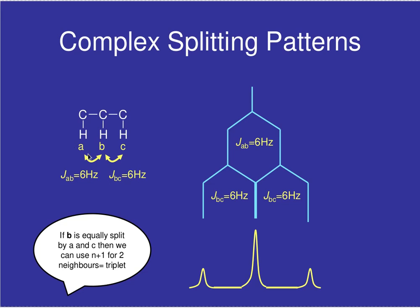Looking at the left-hand neighbor of B: if B had no neighbors it would be a singlet. However, in the presence of the single neighbor on the left — proton A — it would split into two. Notice I'm ignoring C for now. If it was only in the presence of A, it would split into two, and that's why you see two vertical lines here — it is split into two because of A.